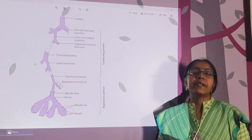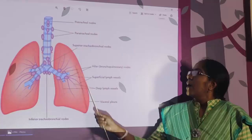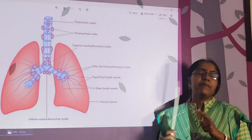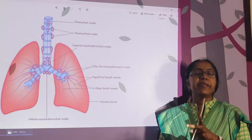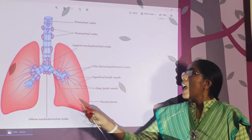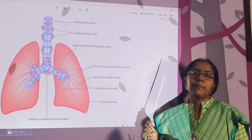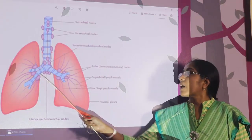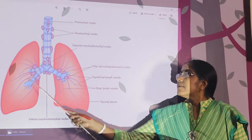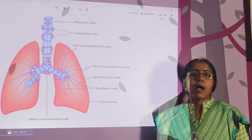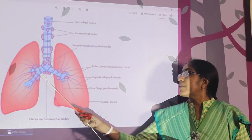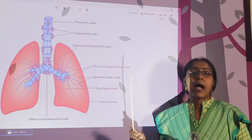Now, lymphatic drainage of the lung. The lymph is drained by two sets of vessels: superficial vessels and deep vessels. Superficial vessels ramify beneath the visceral pleura and around the extrapulmonary bronchi, draining into the bronchopulmonary lymph nodes. Deep vessels are arranged around the intrapulmonary bronchi, bronchioles, pulmonary vessels, and septal tissue, and lymph is finally drained into the bronchopulmonary lymph nodes.